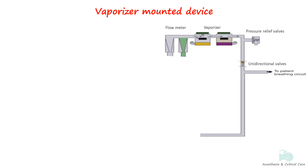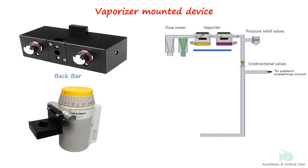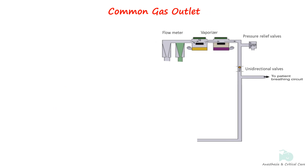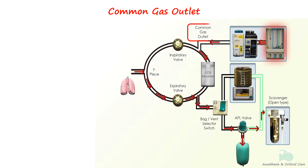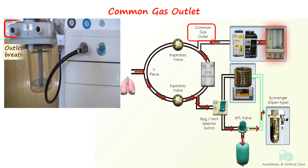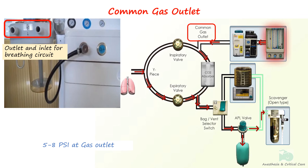The vaporizer mounting device is located between the flow meter and the common gas outlet and is permanently mounted; vaporizers and flow meters are connected to each other and bolted with a back bar. The common gas outlet receives all gases and vapors from the machine and delivers the mixture to the breathing system, connecting to the anesthetic breathing circuit to deliver the combined gases and anesthetic agent to the patient. The pressure delivered at the outlet is 5 to 8 psi.